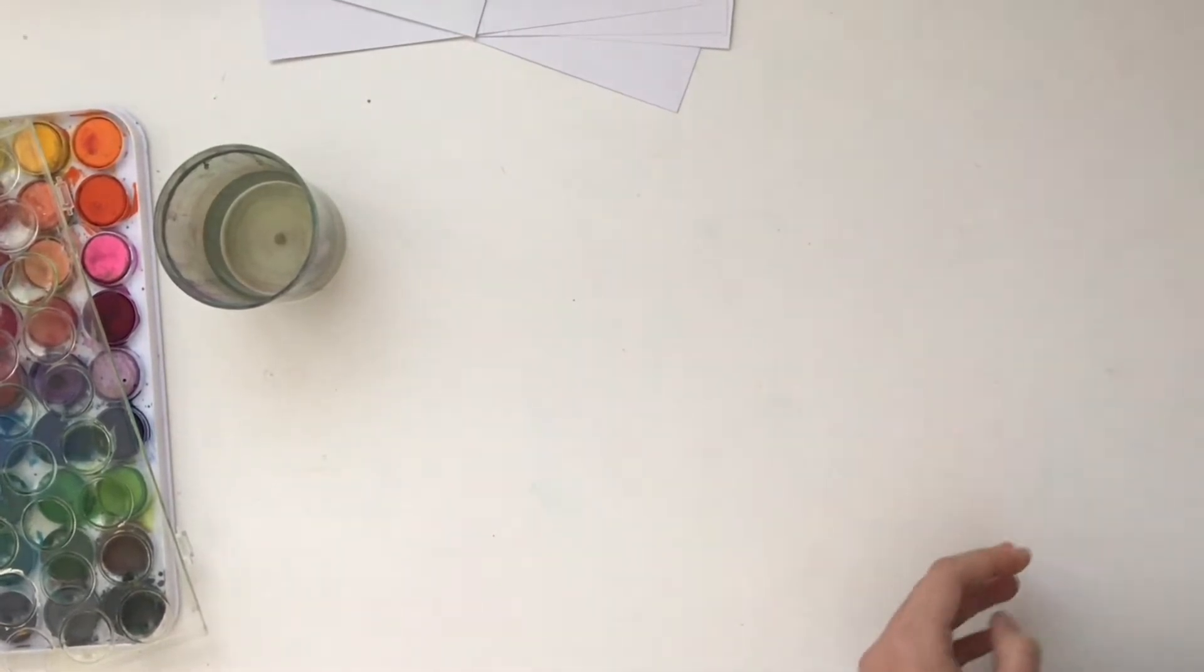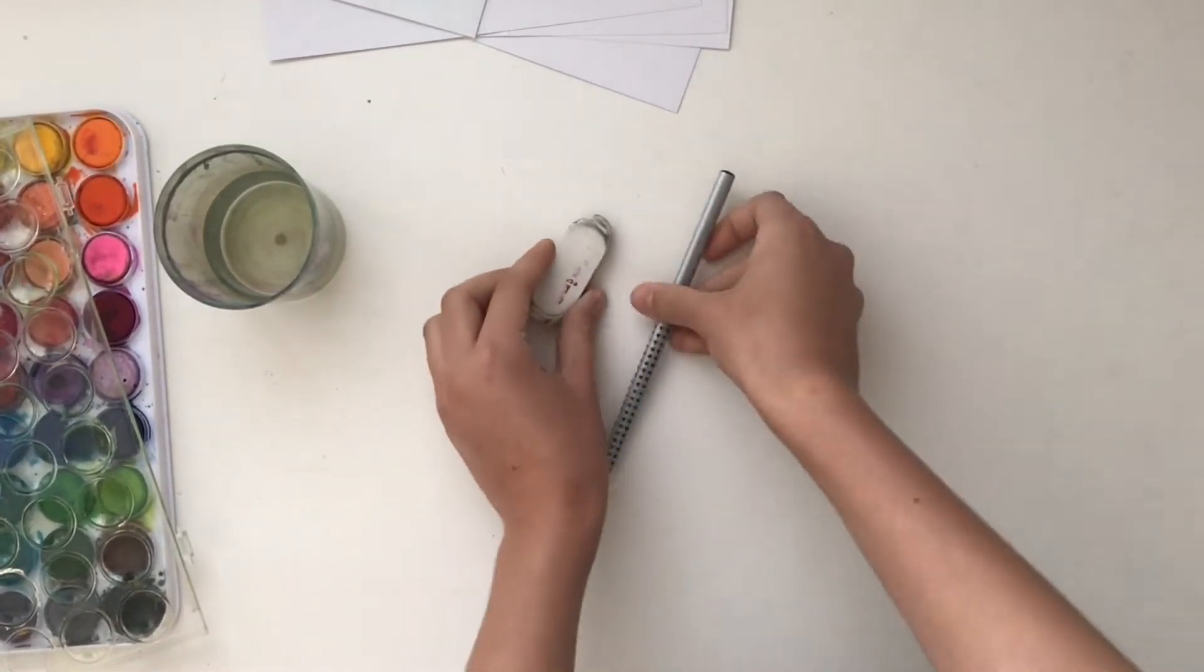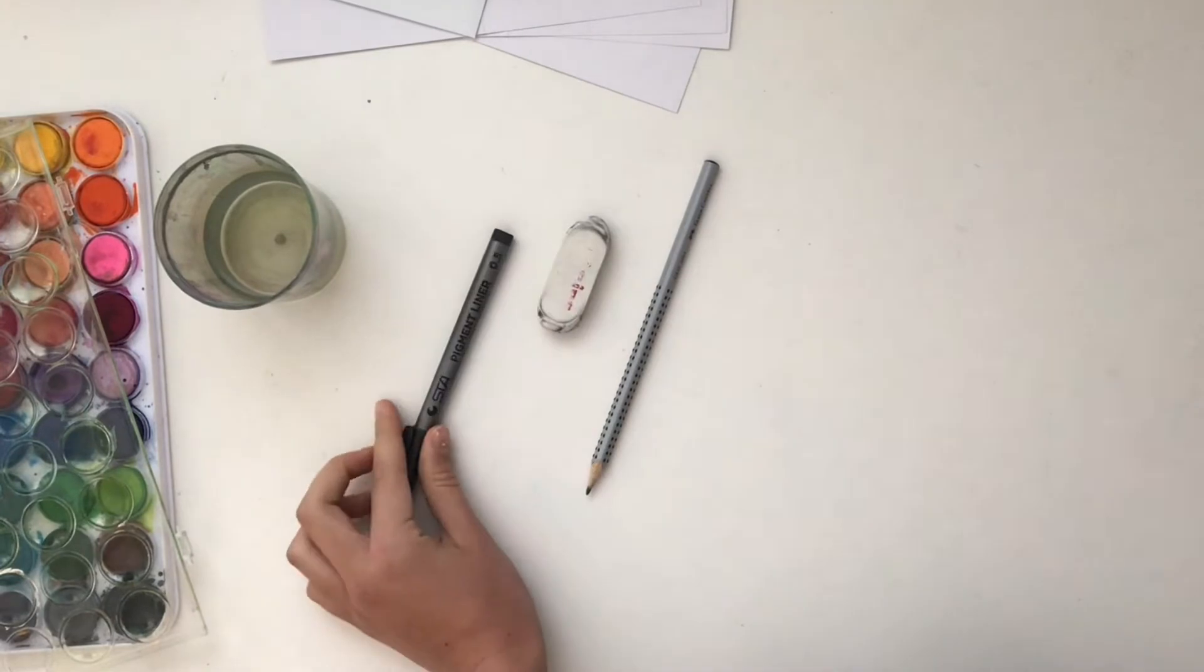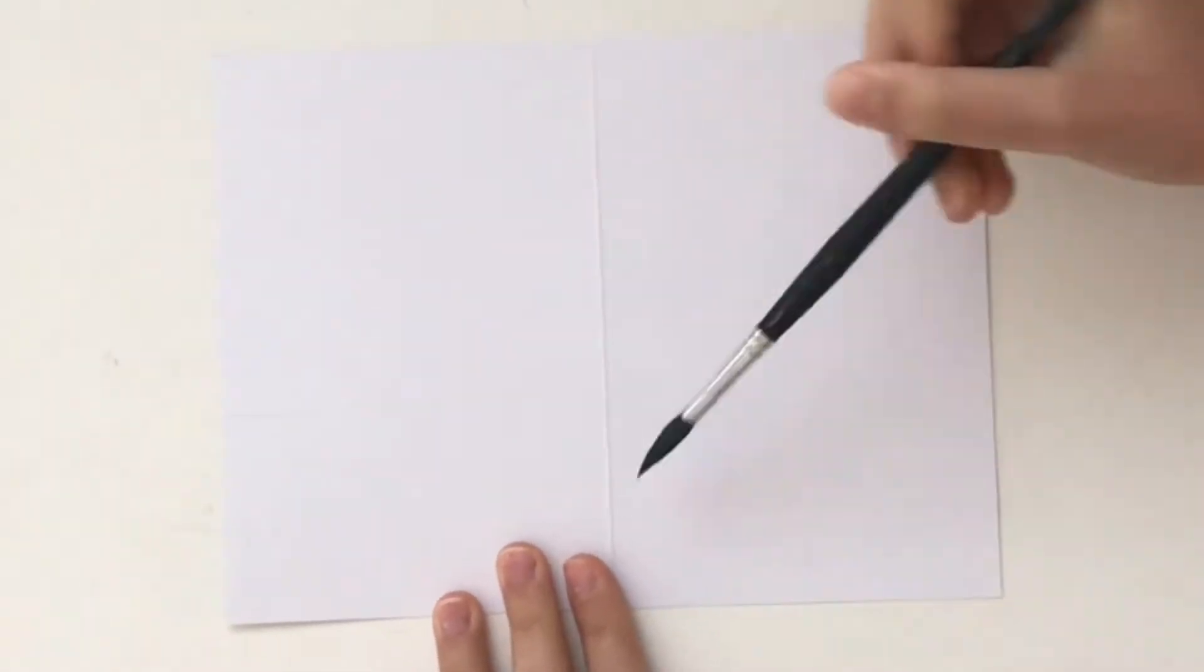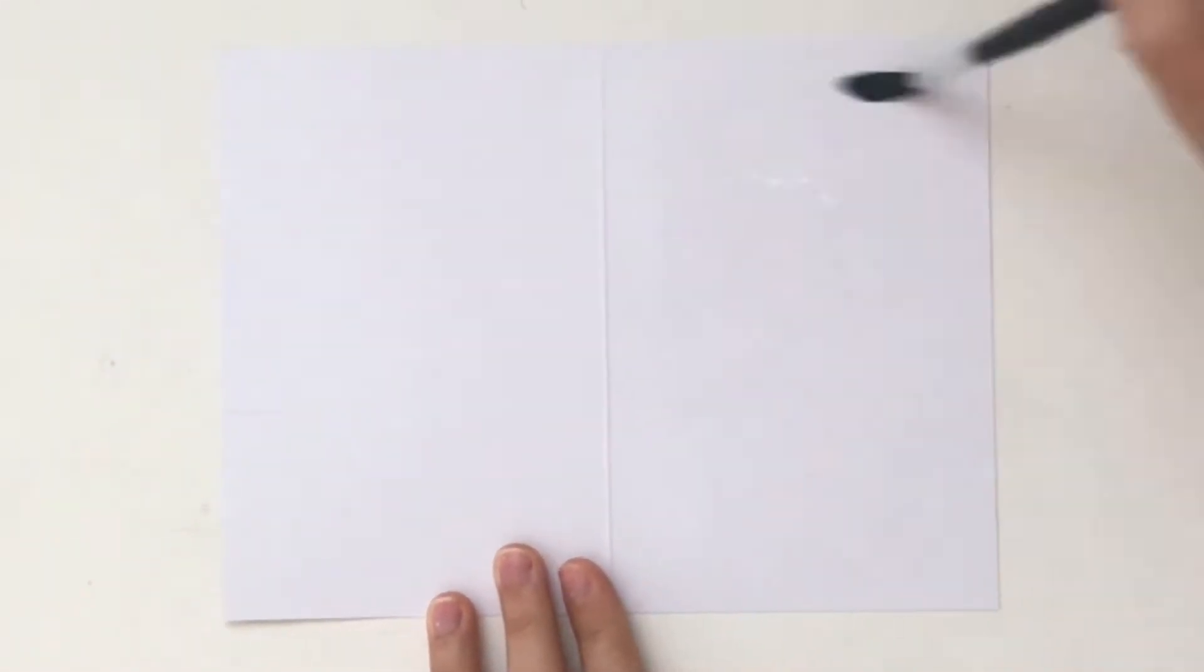And some water, paintbrushes, a pencil and an eraser in case you need to rub anything out, and a fine liner. So for this first card we are going to use a wet-on-wet technique, so you start off by just wetting your page with water.